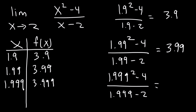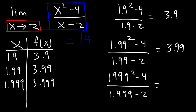So notice that as x approaches 2, the expression x squared minus 4 over x minus 2 approaches the number 4. It gets closer and closer to 4. So therefore the limit is 4.